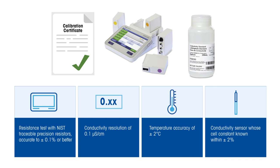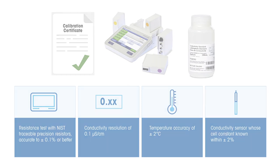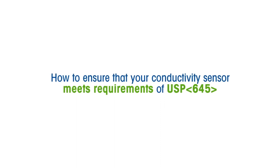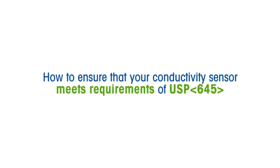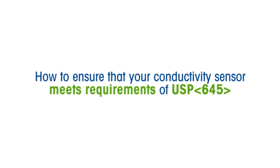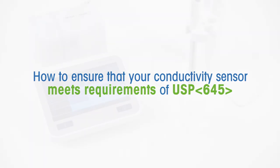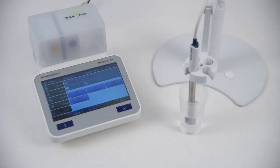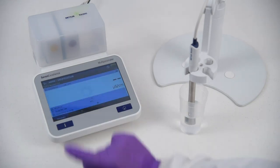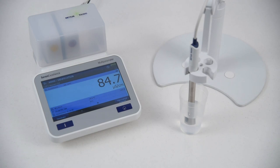This can be verified using a solution of known or traceable conductivity solution. This procedure will show you how to ensure that your conductivity sensor meets the requirements of USP645. If the conductivity sensor you use has a certified cell constant, only a verification in a low conductivity standard is required.